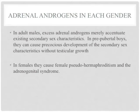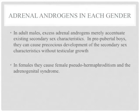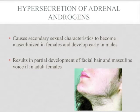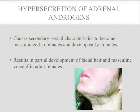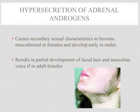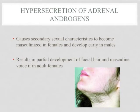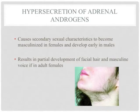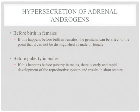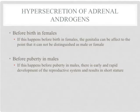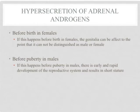In females, excess androgens will cause female pseudo-hermaphroditism and the adrenogenital syndrome, which we will discuss more later. In female pseudo-hermaphroditism, the woman is chromosomally and gonadally female but may have male or ambiguous external genitalia. If adrenal androgens are hypersecretted, the sexual characteristics of females become masculinized and male sexual characteristics begin to develop early. Some symptoms that hypersecretion of adrenal androgens causes in females are facial hair, called hirsutism, and a deep voice.